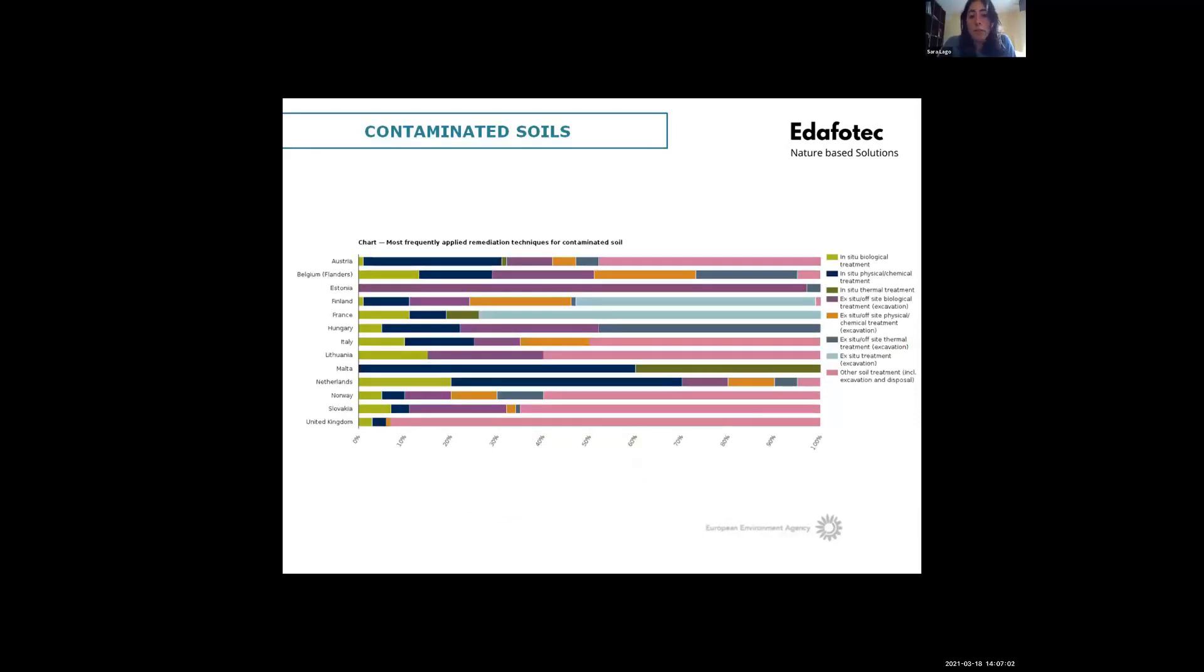This chart breaks down the most frequently applied remediation techniques for soil contamination. To sum up, traditional techniques are most frequently used than new ones, than alternative ones. There is also a tendency to use ex-situ measures in opposition to in-situ ones. In particular, excavation and disposal, the pink one, is one of the most commonly applied and it stands for 30 percent of remediation sites.